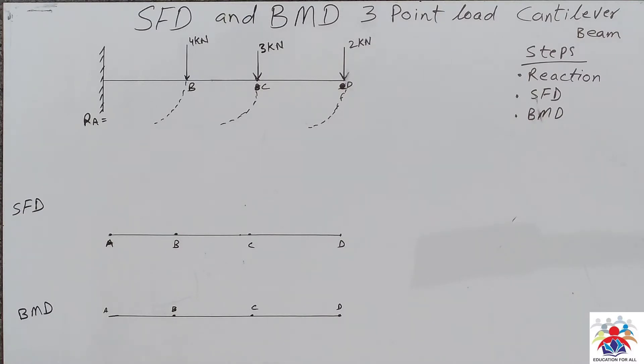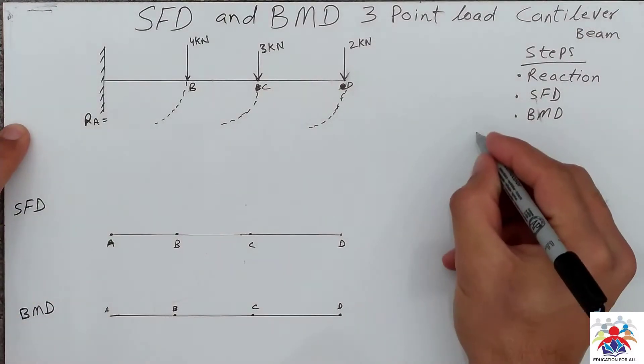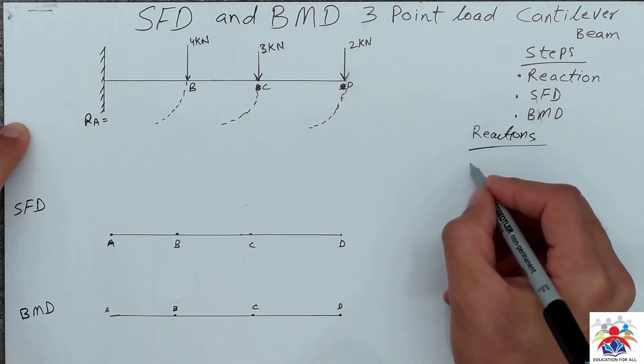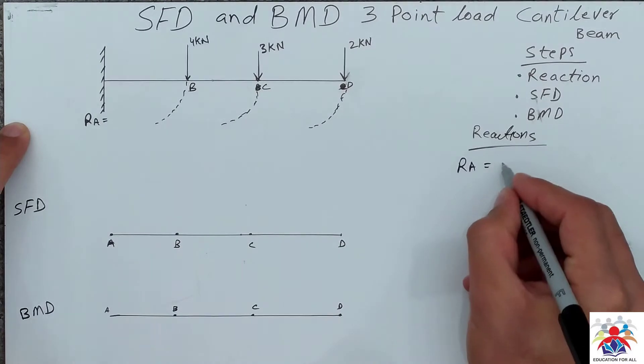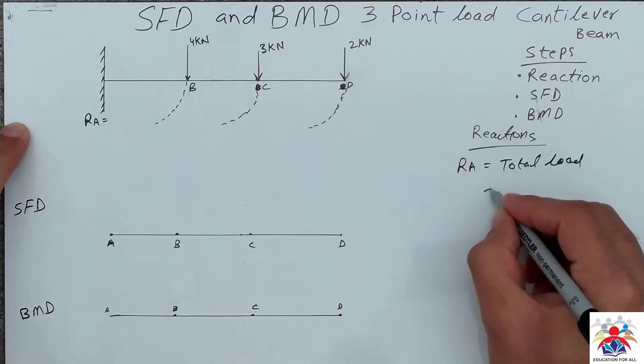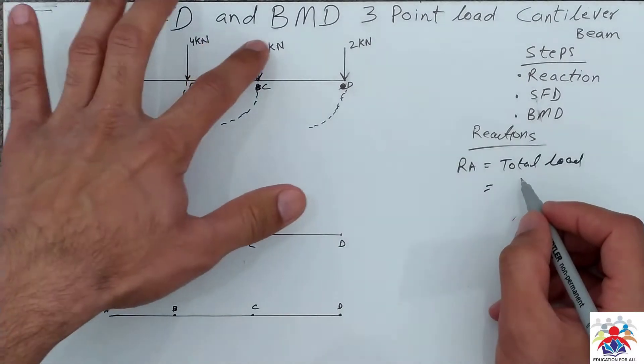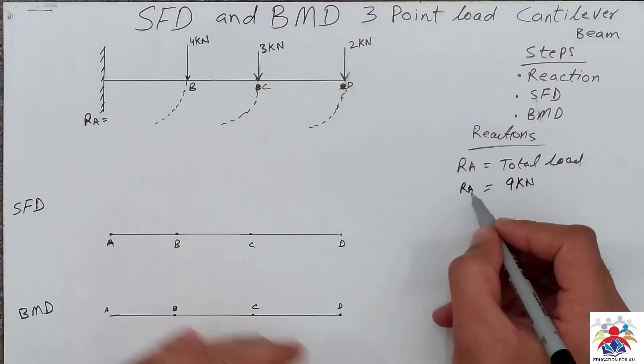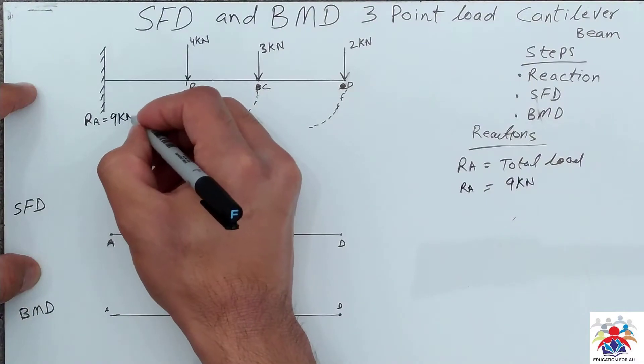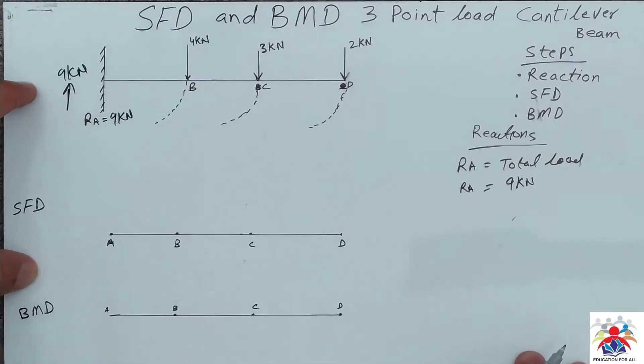First of all we have to calculate reactions. Reactions are at RA because we have only one support. It will be the total load only. How much is the total load? 4 plus 3 plus 2 will be 9 kilonewtons at RA, so it'll be 9 kilonewtons acting upwards.